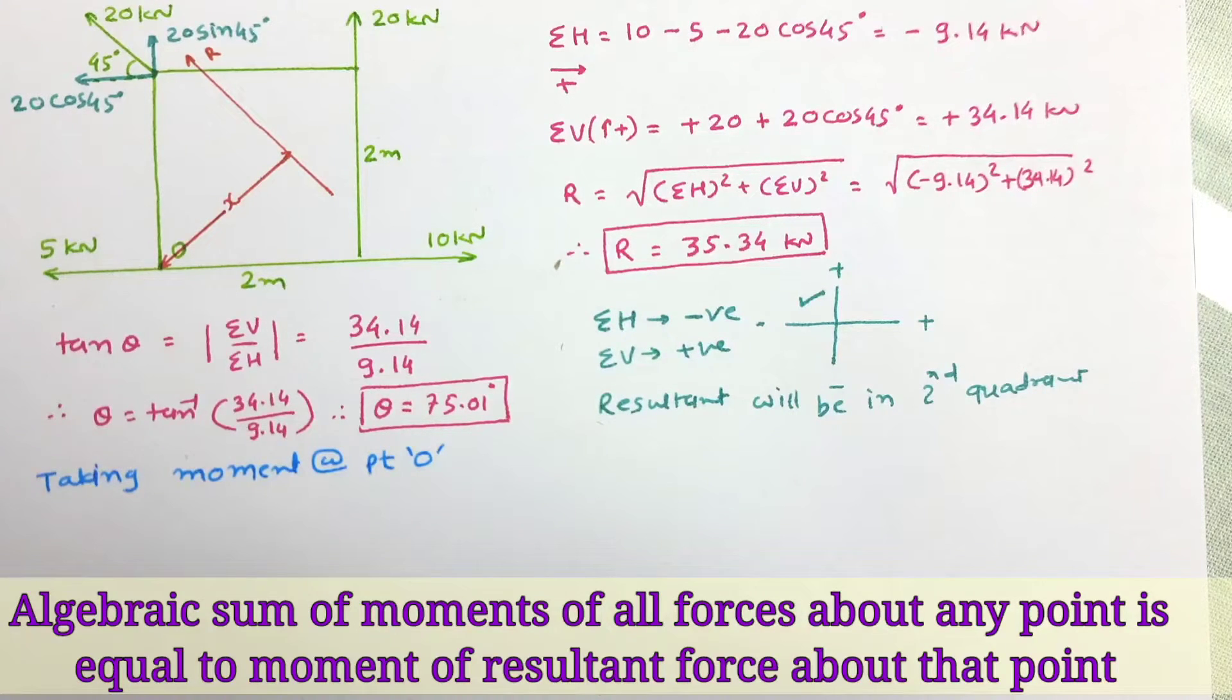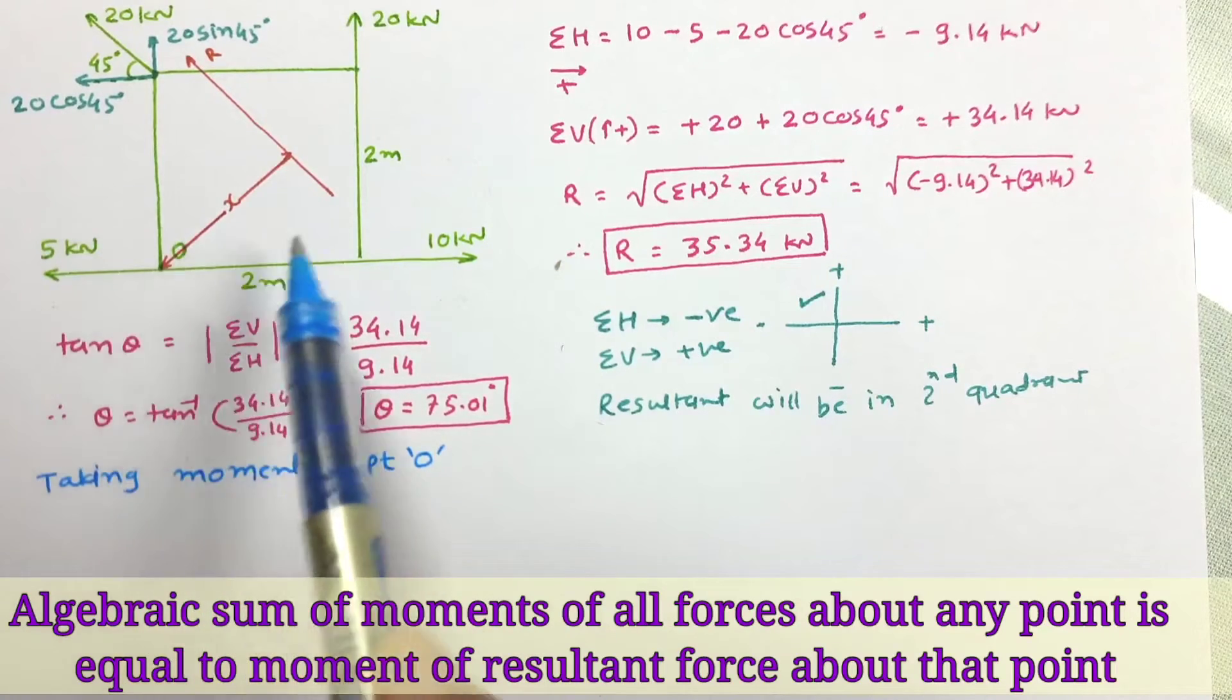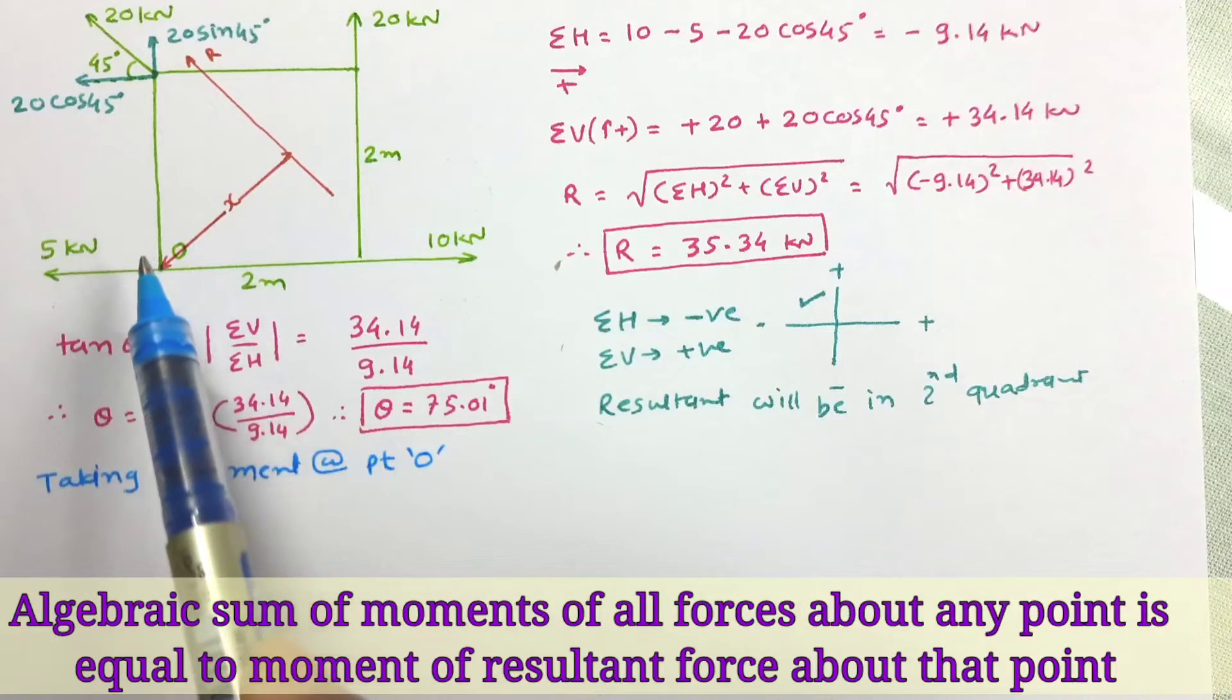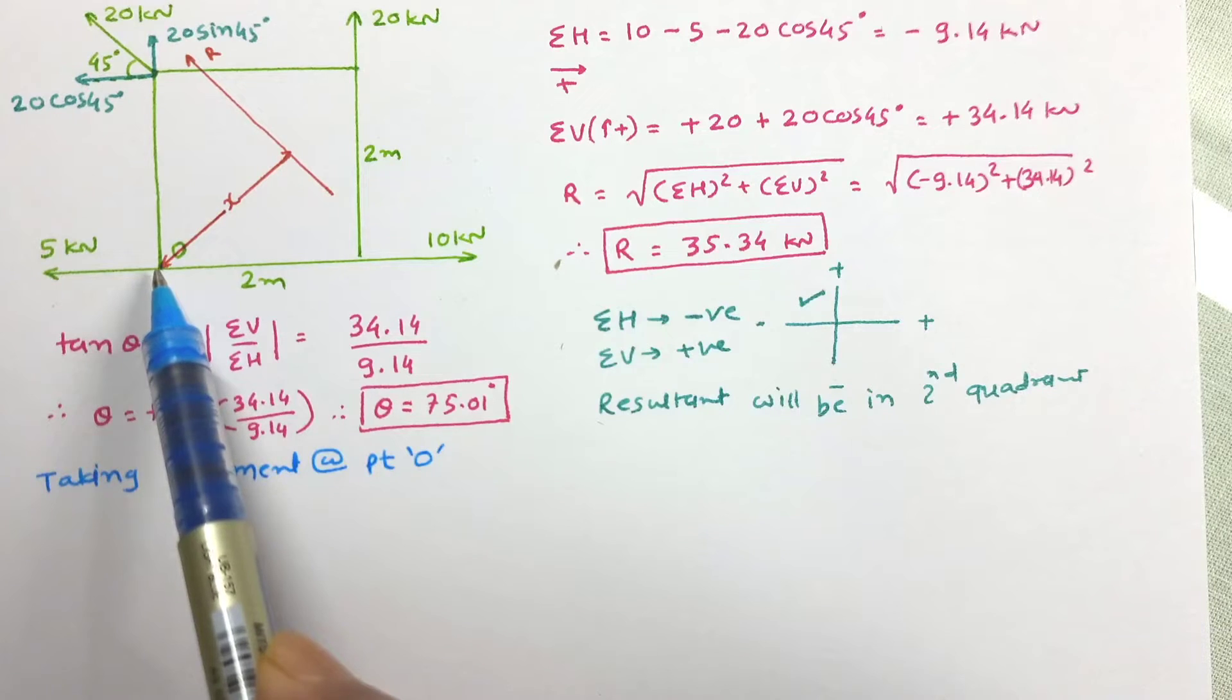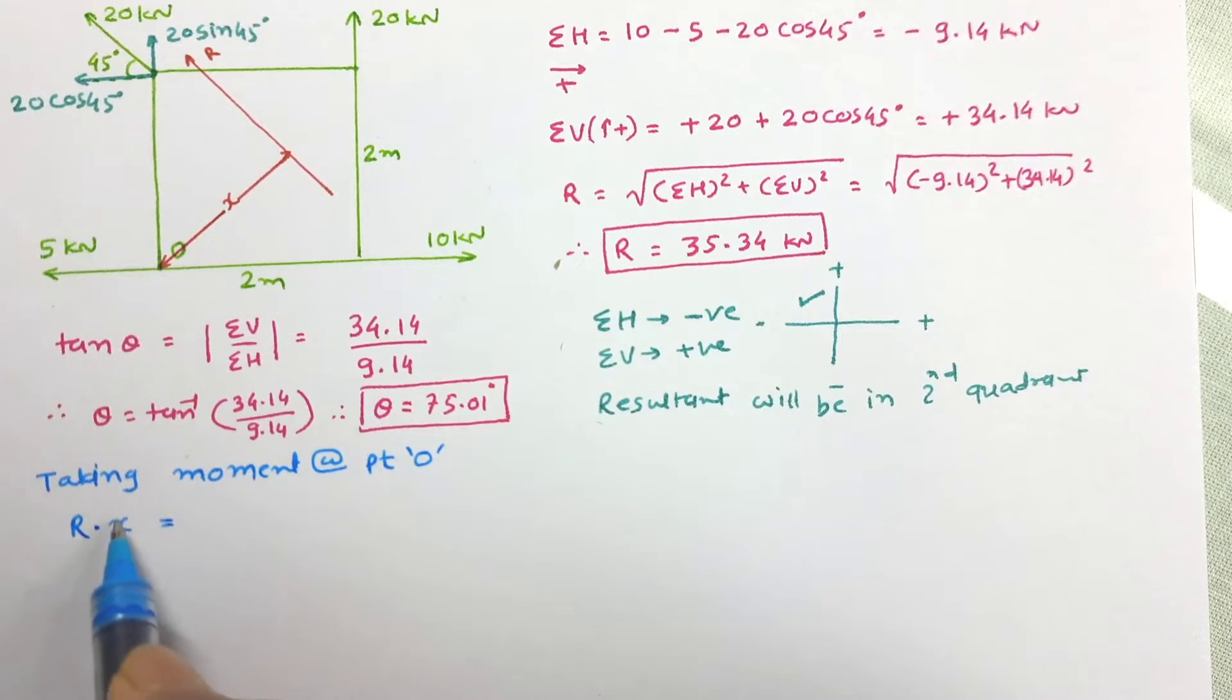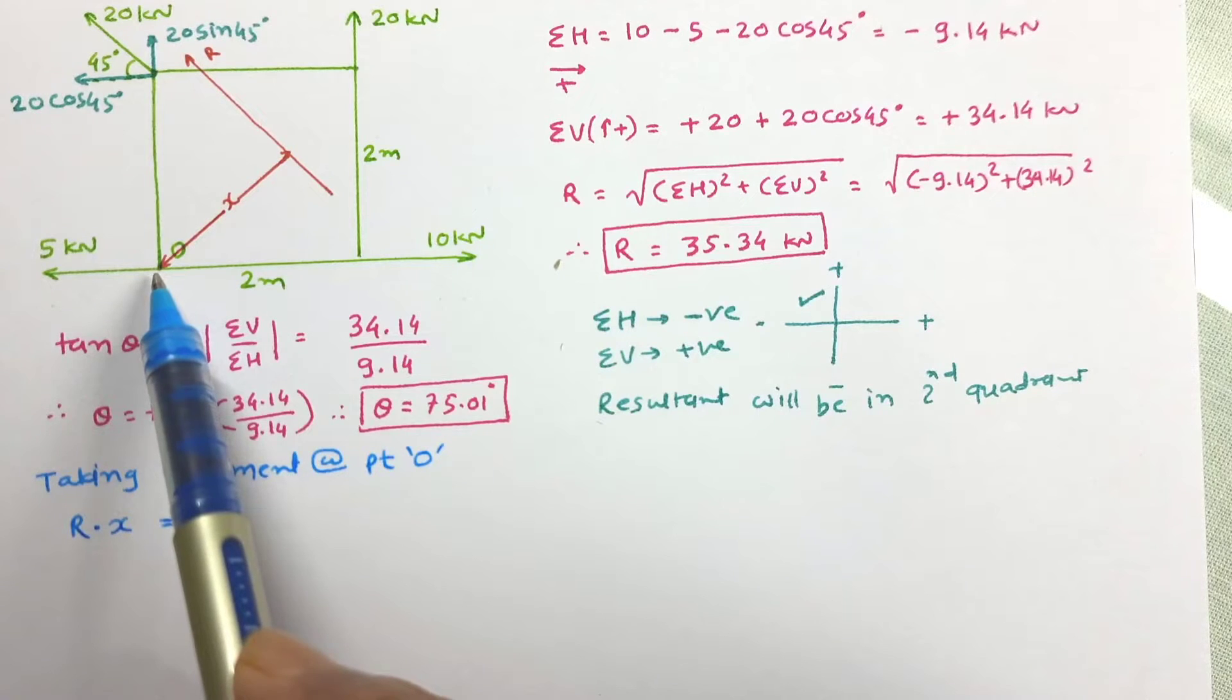For that let us apply Varignon's theorem, according to which the moment of all forces about any point will be equal to moment of resultant about that point. So moment of this resultant about point O will be force R into distance x, and this will equal to the moment of all forces about O point. Now it can be seen that...